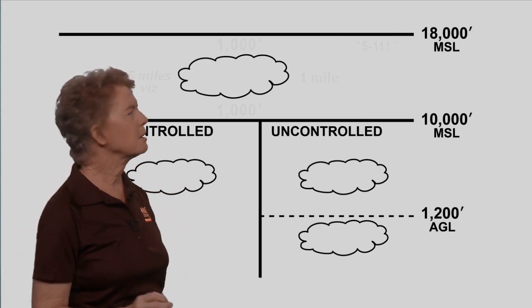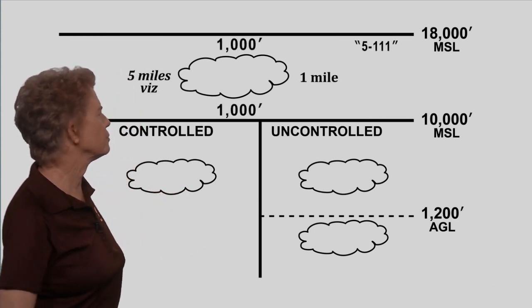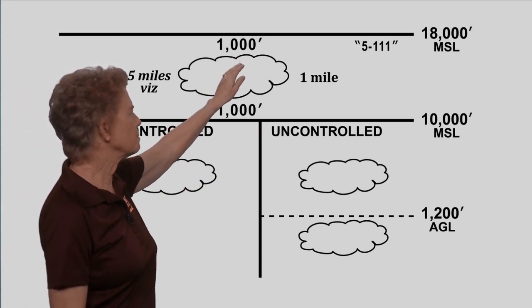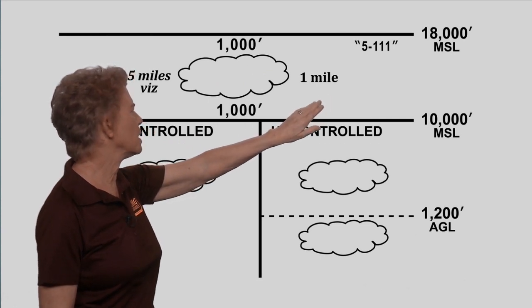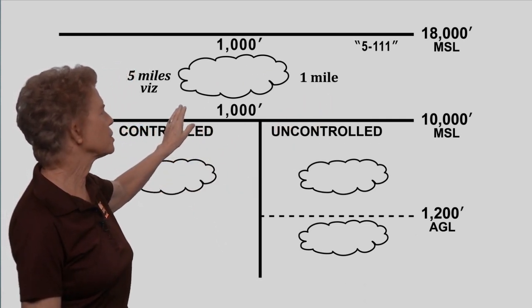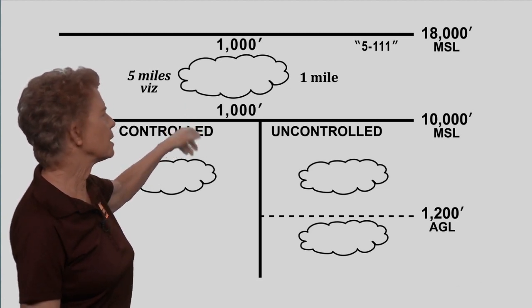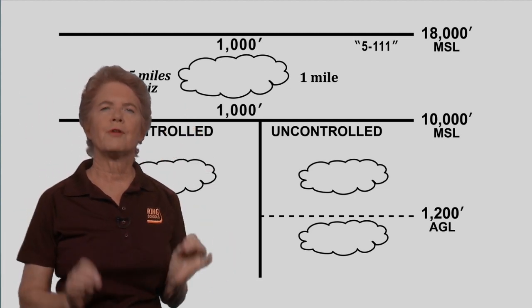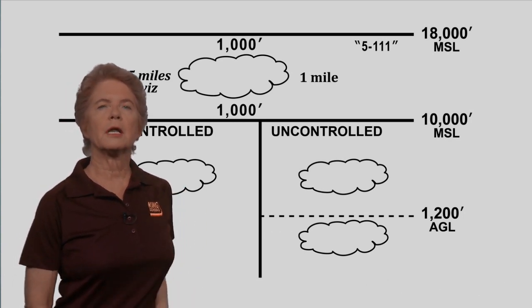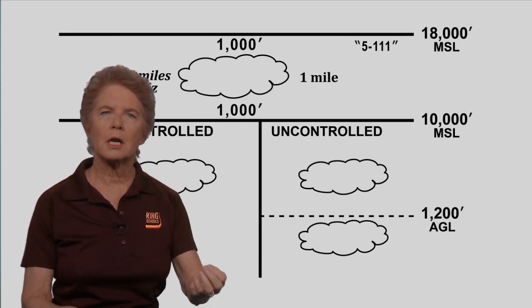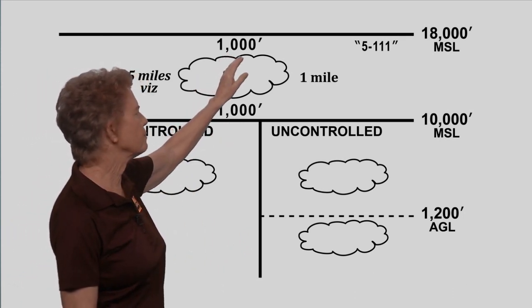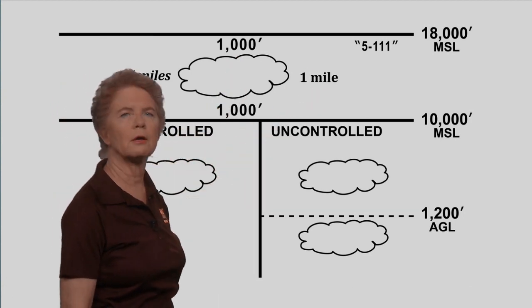Between the 10,000 and 18,000 foot lines, it's 1,000 feet below, 1,000 feet above, and one statute mile horizontally from the cloud with five statute miles in-flight visibility. So think 5111, five miles visibility and three ones for your required cloud distance. 1,000 feet below, 1,000 feet above, and one mile horizontally.